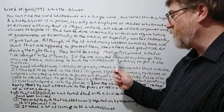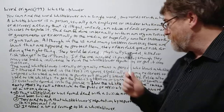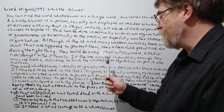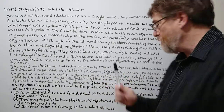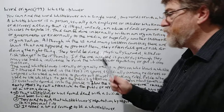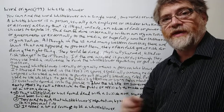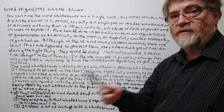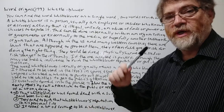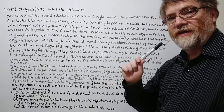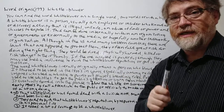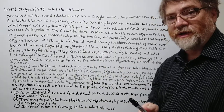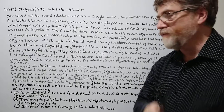If the one accused is powerful enough, they may use the media to ruin the whistleblower's reputation, or at least put it into question, to try to cover themselves. That could be a way to get around it — putting all this criticism out there, or even using the media as an attack dog against the whistleblower if they're powerful enough to do that.